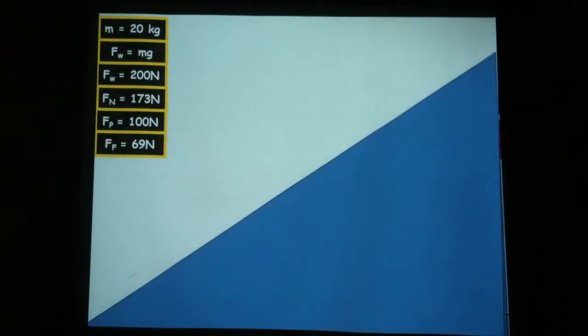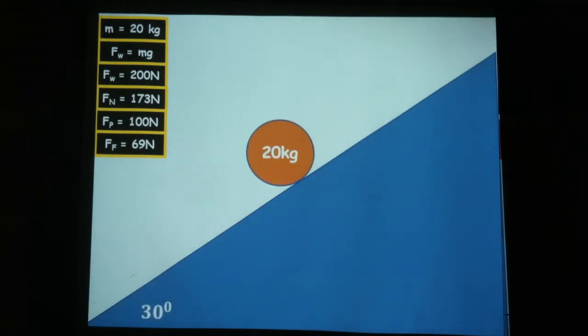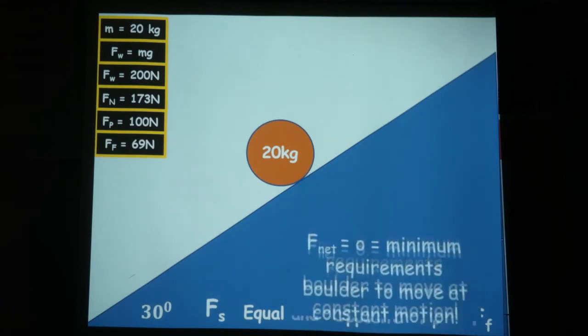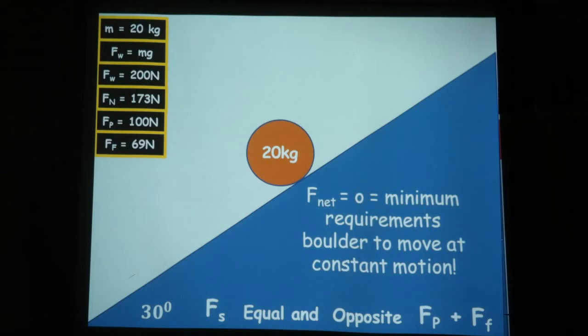Again, here are my values, and here is the mountain, 30 degrees. That's the boulder, Sisyphus, equal and opposite to Fp plus Ff. So, Fnet equals 0, minimum requirements for the boulder to move at constant motion. So, that's the Ff and Fp working against Sisyphus in the other direction.